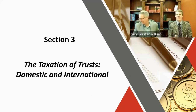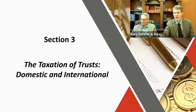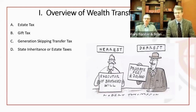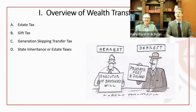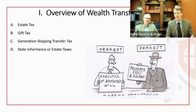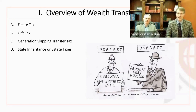Now the exciting part — taxes. All these structures are great, but how are they taxed? There are different types of taxes: on the transfer side (subtitle B) you have the gift tax, estate tax, and generation-skipping tax (GST). Some states also have their own gift and GST taxes, though not Florida. At the federal level there are three transfer taxes.